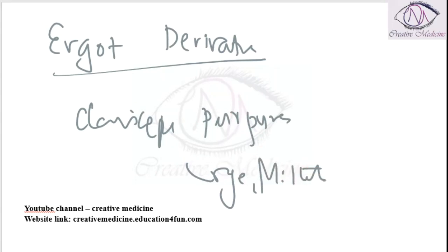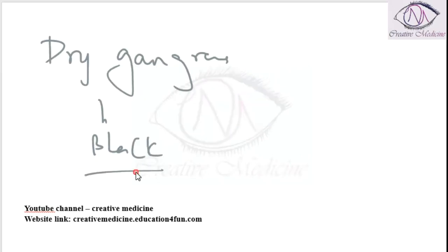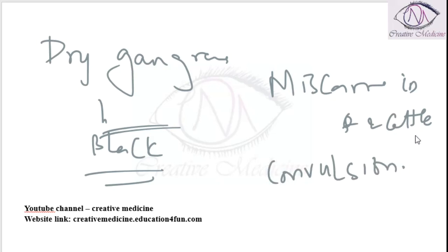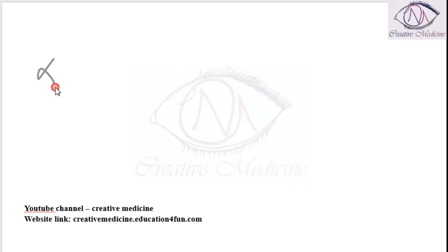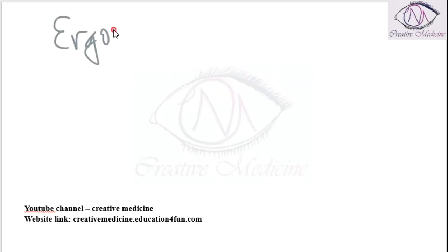Ergot alkaloids will cause dry gangrene of the hands and feet, and these become black or as if they were burnt. This dry gangrene which appears black or as if burnt is a prominent feature. It is also associated with miscarriages in women and cattle who have ingested this fungus accidentally. Convulsions are also seen. This alkaloid affects alpha receptors, dopaminergic receptors, and 5-HT receptors. The toxicity of ergot alkaloids is called ergotism.